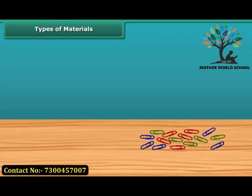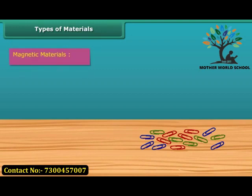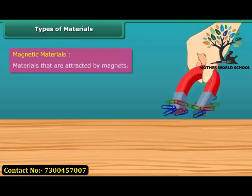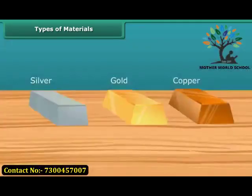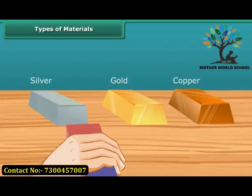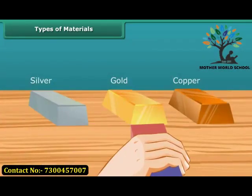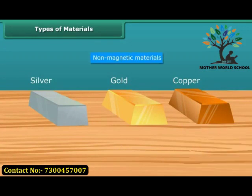Now let us look at the types of materials. Materials that are attracted by magnets are called magnetic materials. For example, screws, nuts, and bolts are magnetic materials. Materials that are not attracted by magnets are called non-magnetic materials.